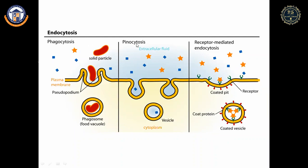Endocytosis includes phagocytosis, pinocytosis, and receptor-mediated endocytosis. In phagocytosis, solid particles are engulfed and destroyed by lysosomal enzymes. In pinocytosis, extracellular fluid carrying foreign antigens is engulfed and processed similarly. In receptor-mediated endocytosis, the cell has receptors to which foreign antigens bind, followed by the same process as phagocytosis.